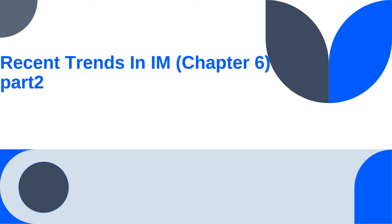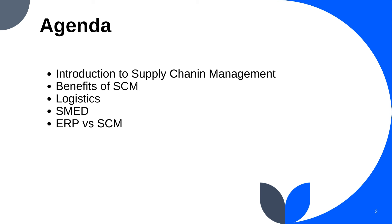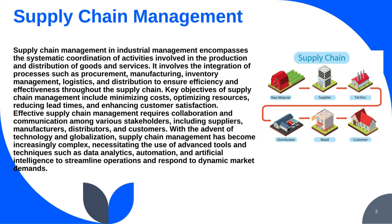In industrial management, this is the last topic: recent trends in industrial management. This is part 2 — part 1 is already uploaded. In part 2 we discuss more concepts about recent trends in industrial management. The agenda includes: introduction to supply chain management (SCM), the benefits of SCM, logistics, SMED, and ERP versus SCM.